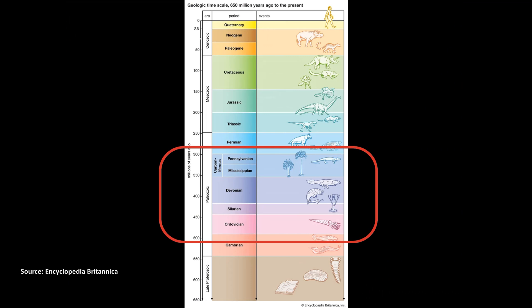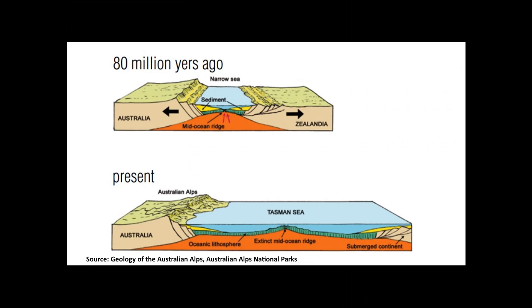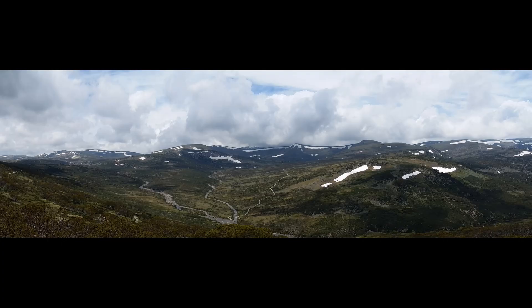The Alps themselves were formed roughly during the Late Cretaceous period, when Zealandia rifted from Australia. The rifting process uplifted the east coast of Australia and created a plateau. Over time, this plateau has been weathered and eroded, forming what we see today.